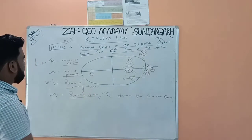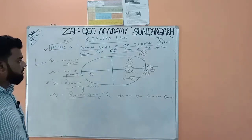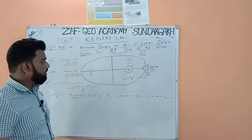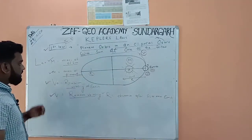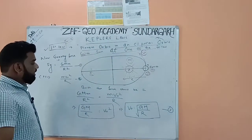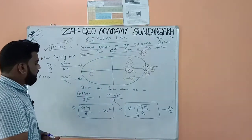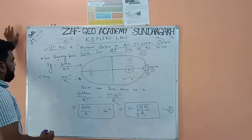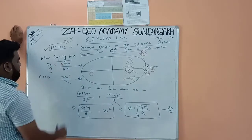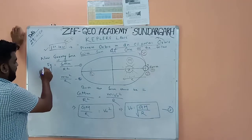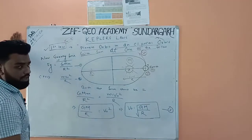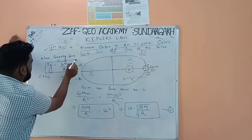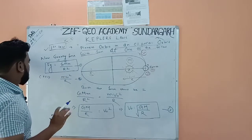I will now derive a formula from which numerical questions are often asked in exams. The gravitational force F_G is equal to G·M·m divided by R squared — the gravitational force between two objects. You have learned this in your gravity lecture in class 11 or class 12.